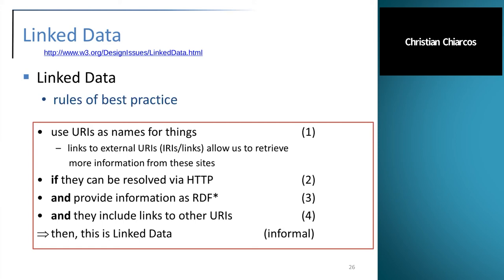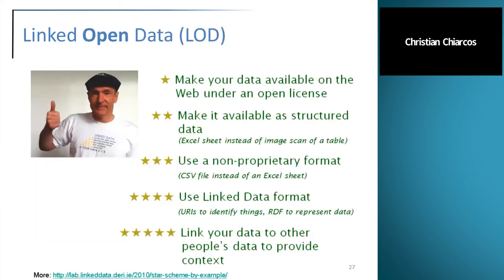This is what we refer to as linked data. Linked data is often coupled with open data via the five-star system: the first star for making data available on the web under an open license, the second for structured content, the third for using non-proprietary data formats, the fourth for using a linked data format (URIs to identify things and RDF to represent data), and the fifth star for linking your data with content from others to provide additional context.